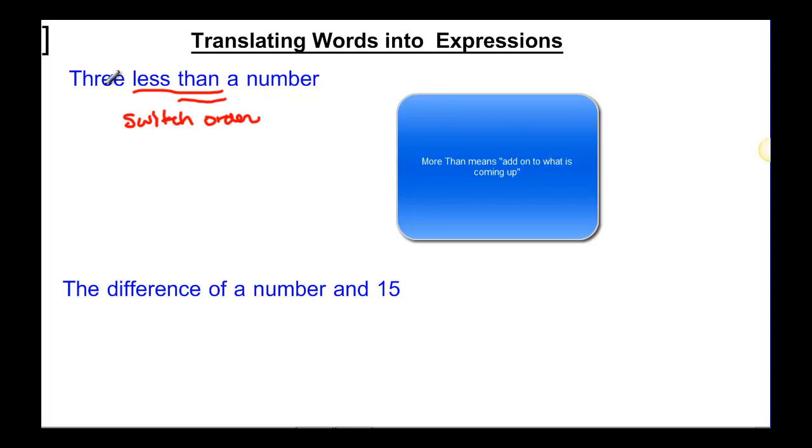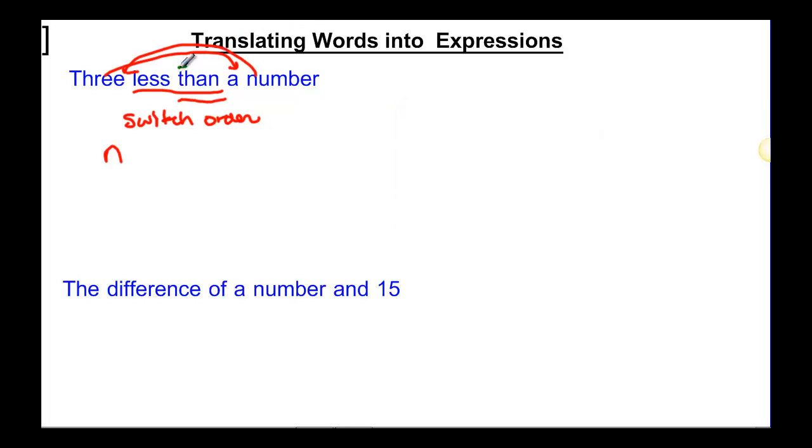So it looks like the three comes first, but the three will go on this side and the number will go on this side. So the number, we'll call it n, less than means subtract. We want to subtract here, so we're going to subtract and then minus three. See how we switch the order?